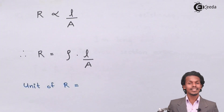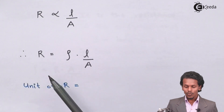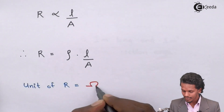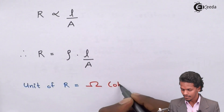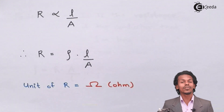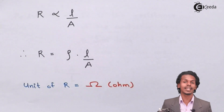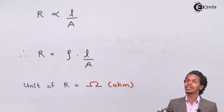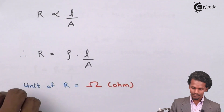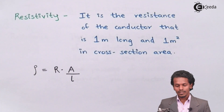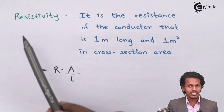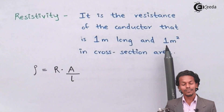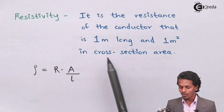This rho is nothing but the resistivity, which we are going to learn now. The unit of resistance is ohm. Now let us see what rho means. Rho means nothing but the resistivity. Resistivity is the resistance of a conductor that is 1 meter long and has 1 meter square area of cross section.